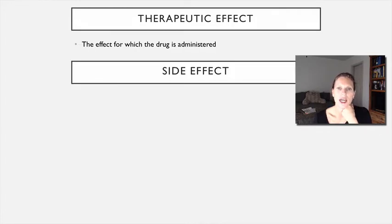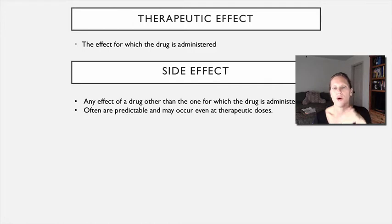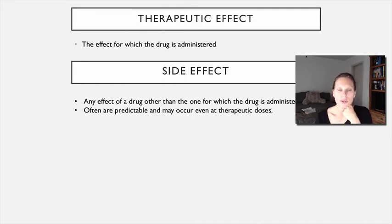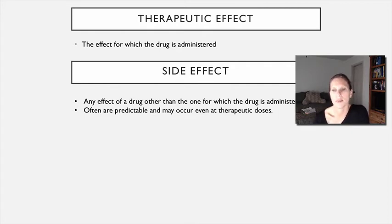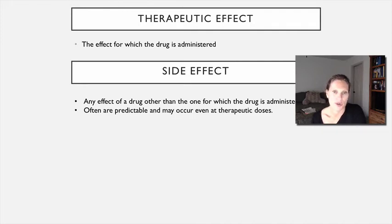A side effect is any effect of a drug other than the one for which the drug is administered. Most of the time, side effects can be predictable and they can occur even at therapeutic doses. Going back to our example of a drug that decreases blood pressure — let's use a beta blocker — a beta blocker can decrease blood pressure, which is its therapeutic effect, but it can also cause a decrease in heart rate. That would be a side effect.